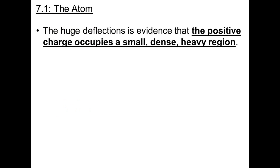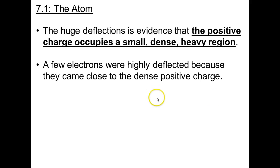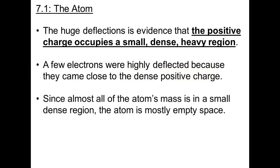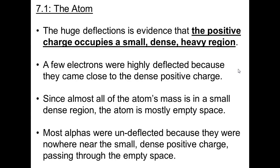And here is the conclusion. These huge deflections provide evidence that the positive charge occupies a small, dense, heavy region. In other words, all of the positive charge in the atom is located in one dense spot. It's not spread throughout like pudding, as Thompson thought. A few alphas were highly deflected because they came close to that small, dense, positive charge. Because all of the atom's mass is in a small, dense region, most of the atom is empty space, which means that most alphas pass through empty space. They're nowhere near the small, dense positive charge, and so they're undeflected as they pass through.